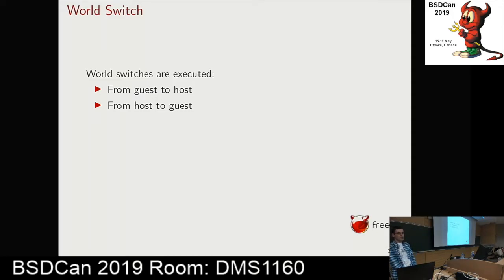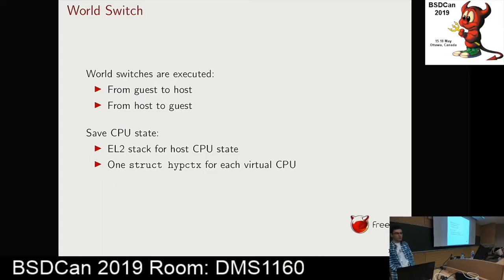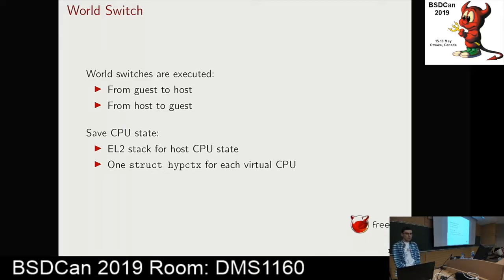World switches are executed from guest to host — saving the guest CPU state and restoring the host state — or when resuming a virtual machine, saving the host state and restoring the guest state. Since we can have only one host CPU thread but multiple virtual CPUs on the same physical CPU, we use the EL2 stack for saving the host state, while for virtual CPUs we use a C struct called struct hipcontext, which is part of the virtual machine context managed by the hypervisor.